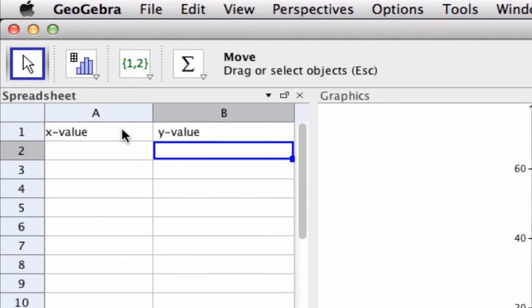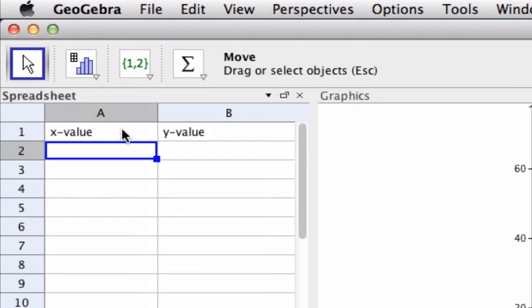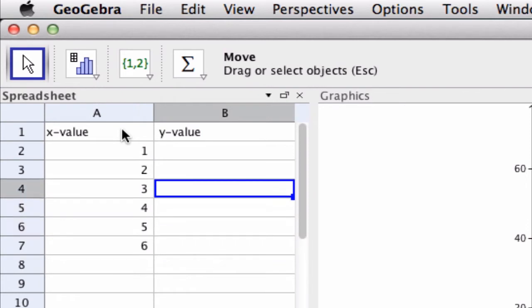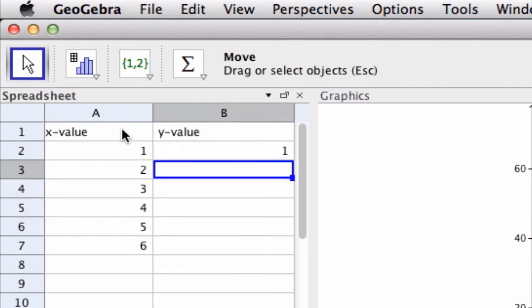Then we can even play with the points to see how that affects our line. So for x values we'll go one, two, three, four, five, six, and for our y values we'll do one, one, three, two, five, and seven.